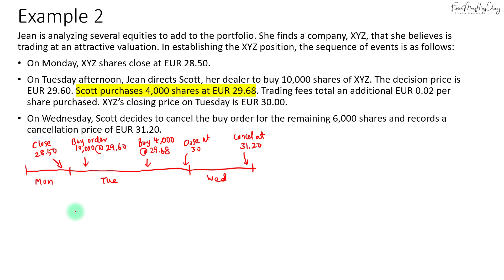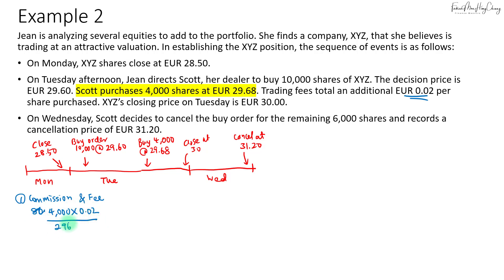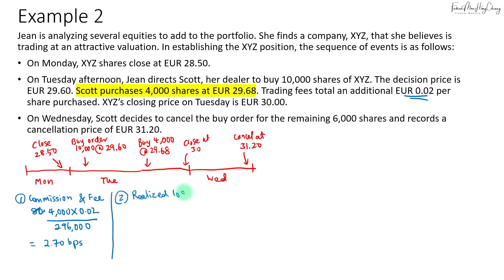Calculating the commission and fee: 4,000 shares times 2 cents each equals 80 euros. In basis points, that's 80 euros divided by the initial paper value of 296,000, which equals 2.7 basis points.